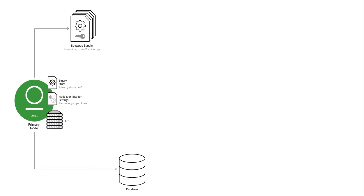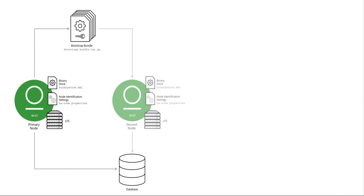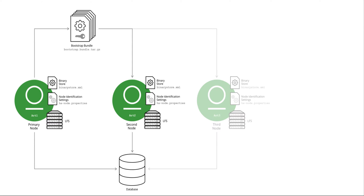Now we'll be ready to launch Artifactory and complete the setup by adding the license key. At this stage we can move to the second node. First we'll create the bootstrap bundle that includes all the cluster configuration data and copy it to the second node. Following that we can install Artifactory and place the bootstrap bundle, which will bring in all the required configuration to the new node, and then launch it. For the third node we'll repeat the same steps — copying the bootstrap bundle and launching.